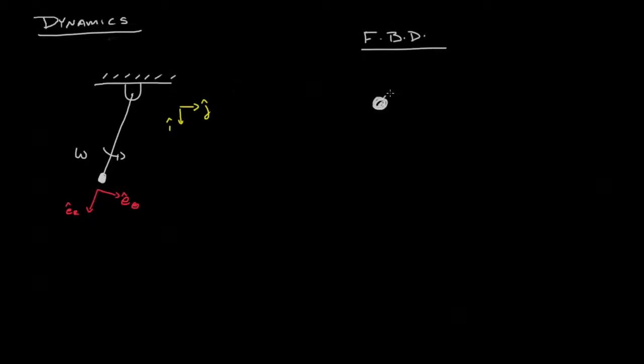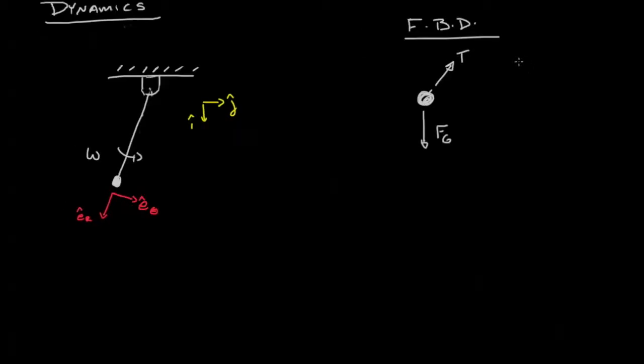So let's draw our free body diagram. Here we have our free body diagram. I've identified the tension in the line and I've used the radial unit vectors to define that, and I've also identified the force of gravity and I've used rectangular unit vectors to define that.